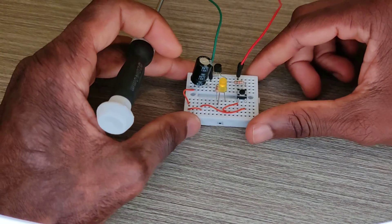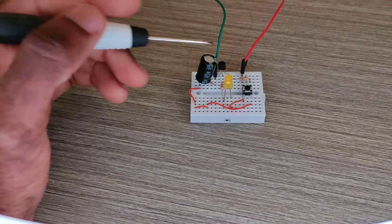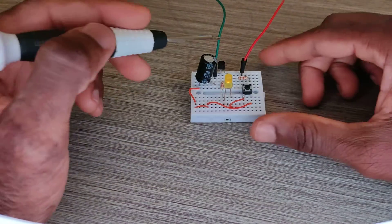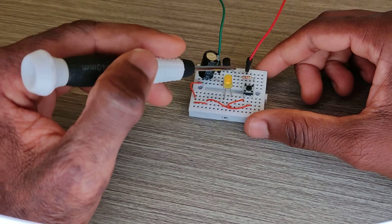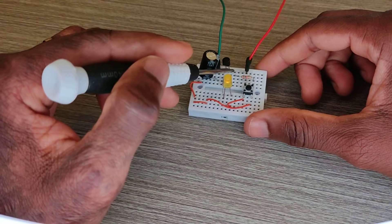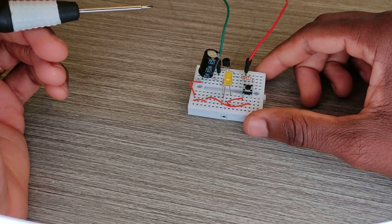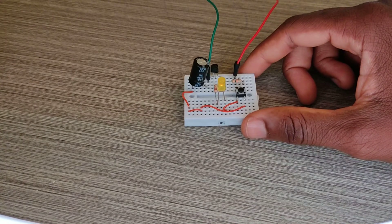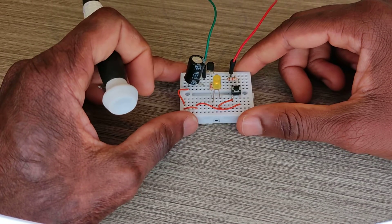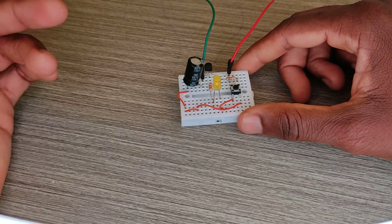Now one thing to keep in mind: the value of the capacitor and that of the resistor - this resistor which is connected to the base pin - they determine the time delay for how long the transistor stays in the conducting mode.